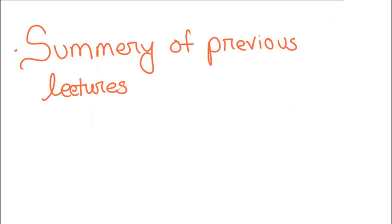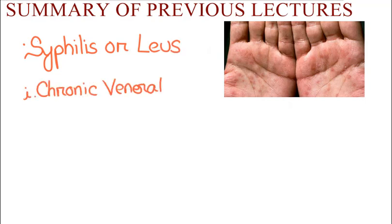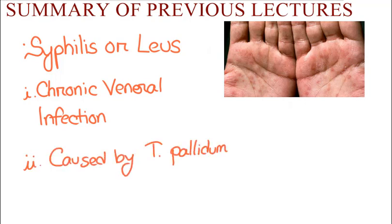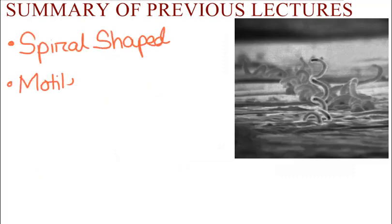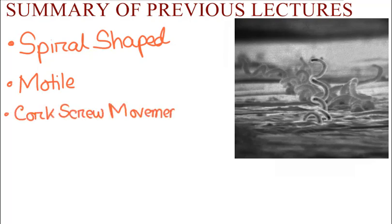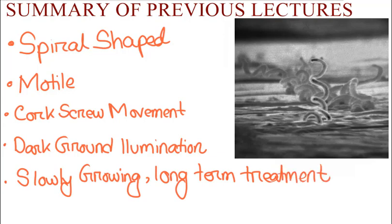After this lecture we will make lectures on specific clinical stages. Syphilis, or lues, is a chronic venereal infection which is caused by the spirochete Treponema pallidum. Treponema pallidum is a spiral-shaped motile bacteria with corkscrew movement, seen by dark ground illumination. It is slowly growing, so it requires treatment for a long time.